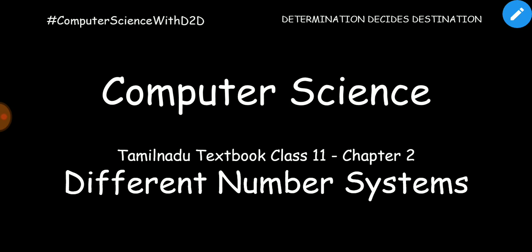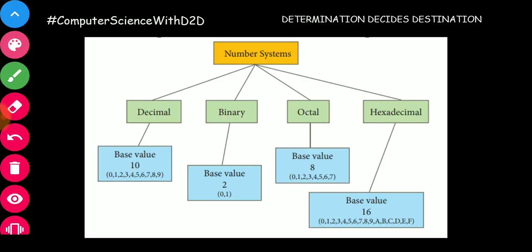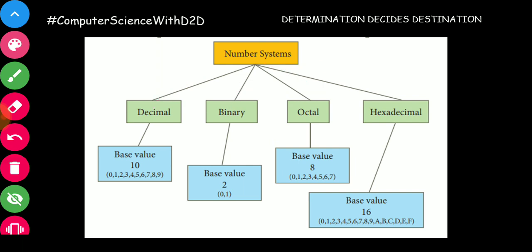Let's get into it. First, the number systems: the decimal number system, binary number system, octal number system, and hexadecimal number system. The base value for decimal is 10, binary is 2, octal is 8, and hexadecimal is 16.